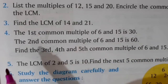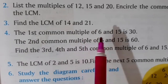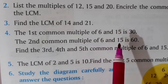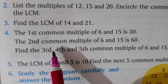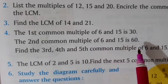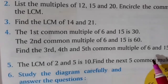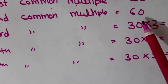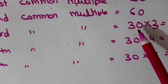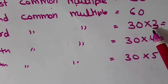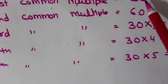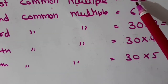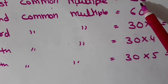Question number 4. The first common multiple of 6 and 15 is 30. The second common multiple of 6 and 15 is 60. Find the third, fourth and fifth common multiple of 6 and 15. Here, the first and second common multiples are given. The first common multiple is 30, the second is 60. The first common multiple is the least common multiple — it is the LCM.